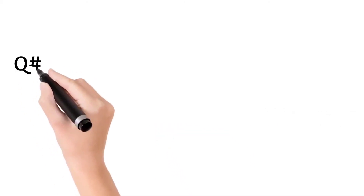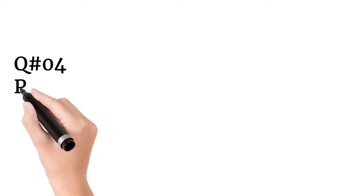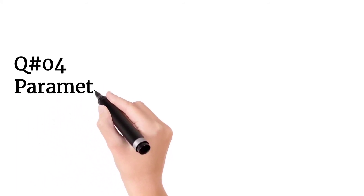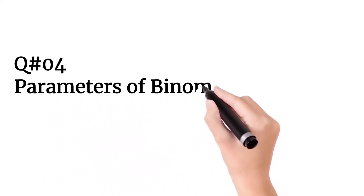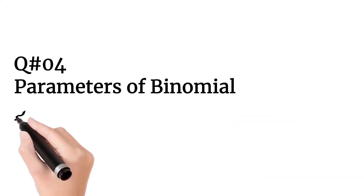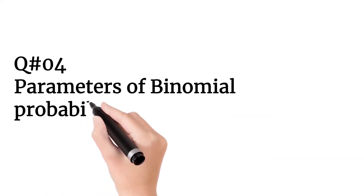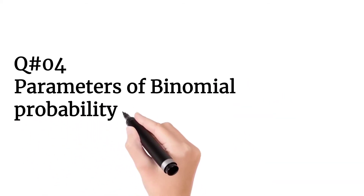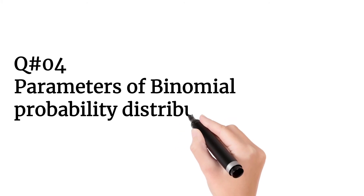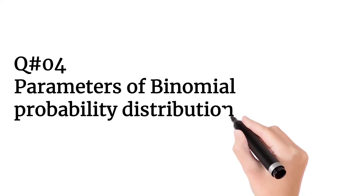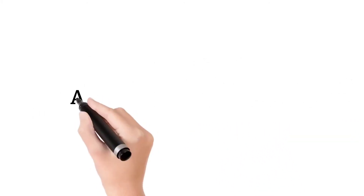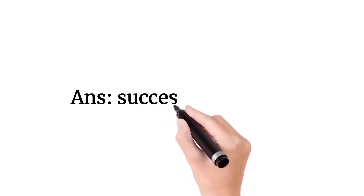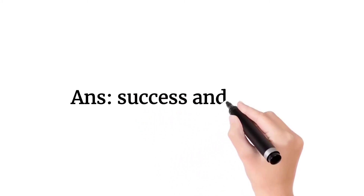Question number 4: Parameters of binomial probability distribution are? We have two parameters — success and failure.